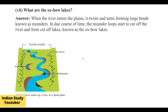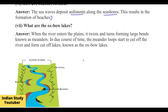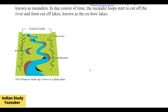What are oxbow lakes? When the river enters the plains, it starts to twist and turn forming meanders. It comes with a lot of force and pressure, and this causes the river to form loops. These loops eventually get cut off from the main river and form what we call oxbow lakes.